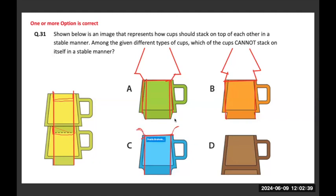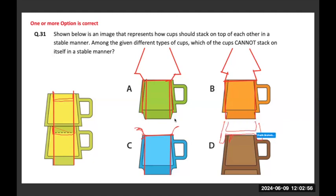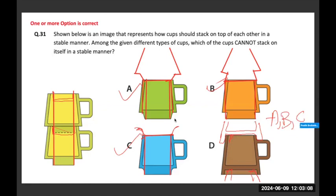With D, the stacking is possible because the stacking happens here and the mouth fits in. So D is the only one which is stackable, and A, B, and C are the ones which cannot be stacked. The correct answer is A, B, and C.